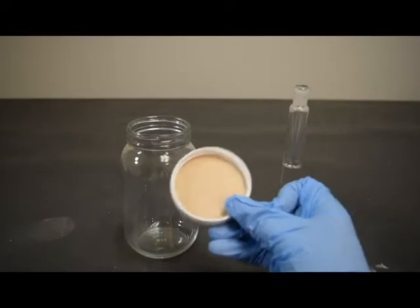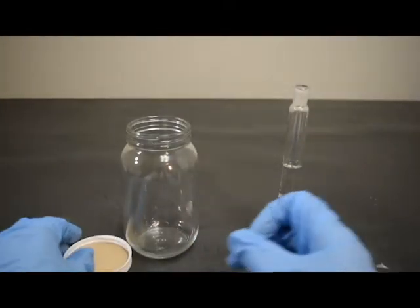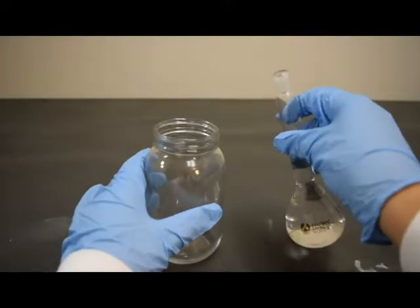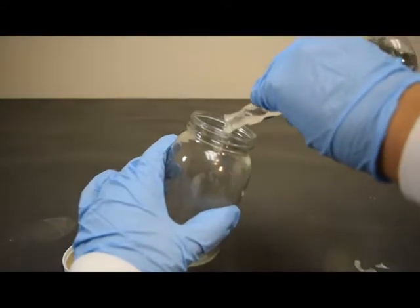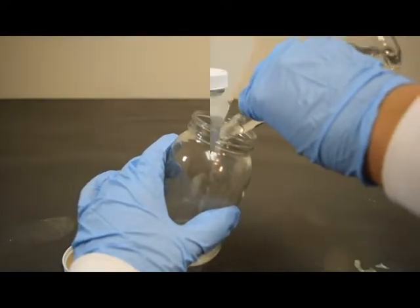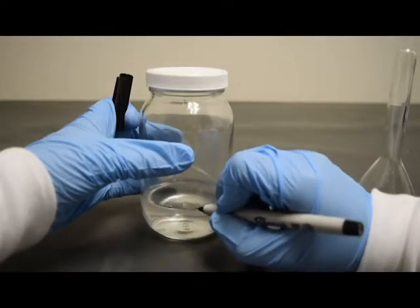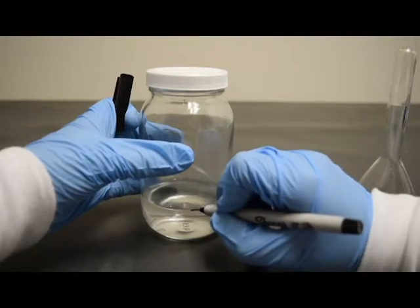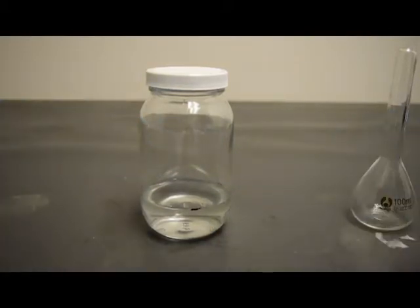Store the spike solution in a glass container with a fluoropolymer lined cap. Since acetone is volatile, mark the solution level on the vial and store in the dark at room temperature. If the solution level is below the line during an inspection later, dilute with acetone to the line.